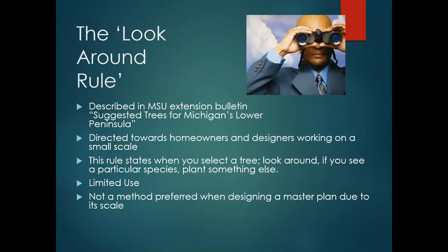The look around rule is pretty simple and was directed more toward homeowners and property owners working on a small scale. The rule simply states that when you want to select a tree, you look around, and if you see a particular species, you plant something else. This has limited use and is certainly not a preferred method when designing master plans or large complexes. For example, when housing communities were developed, this wouldn't necessarily be feasible. But for the homeowner, it worked quite well — as you see a tree species, you plant something else.